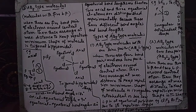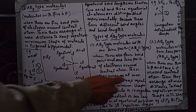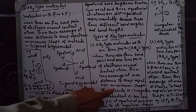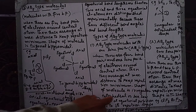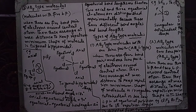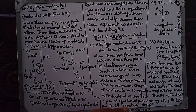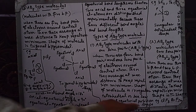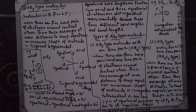AB5 type molecules with one lone pair of electrons: when there are four bond pairs and one lone pair around the central atom, these arrange at maximum distance to keep the repulsion minimum. The shape of the molecule is irregular tetrahedral. The lone pair is placed at the equatorial position.